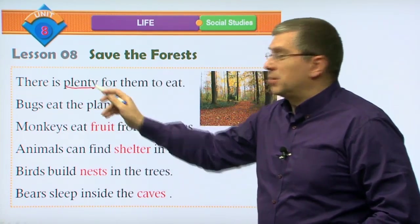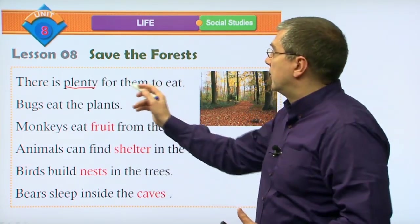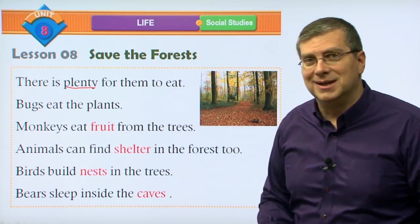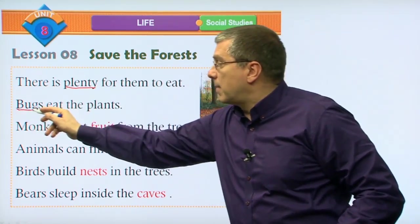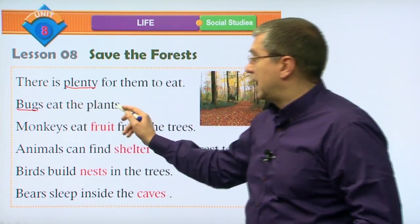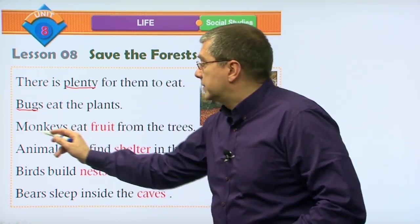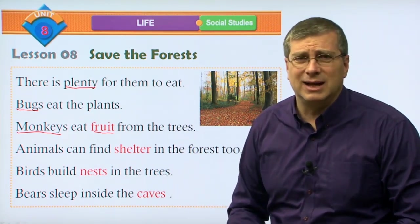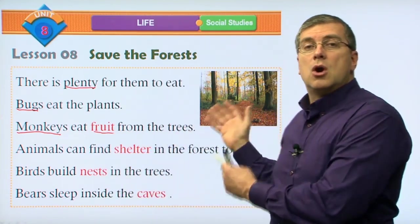There is plenty - a lot of things - for them to eat. Animals will eat the leaves, they'll eat the fruit, and some animals will even eat the wood in the trees. There is a lot of food for animals in the forest. Bugs - another word for bug is insect - insects eat the plants. They eat the leaves; some of them eat the wood of the trees. Monkeys will eat the fruit from the trees. We all know monkeys love bananas. Monkeys will eat many different kinds of fruit that grow in the forest.